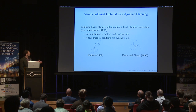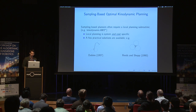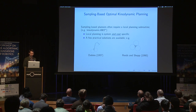Some canonical examples of these solutions for wheeled robots are the Dubin's paths, the Reeds-Shepp paths, and also straight lines if we're looking for shortest paths.